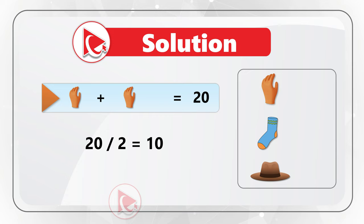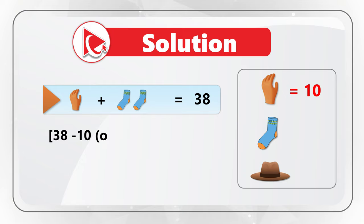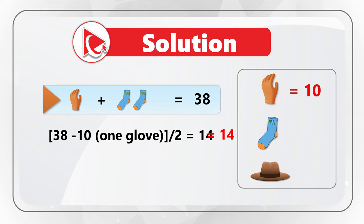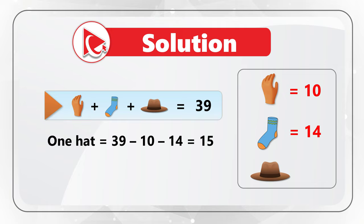Since 2 gloves equals 20, 1 glove is equal to 10, because 20 divided by 2 equals 10. For the second expression, 1 glove and 2 socks equals 38. 38 minus 10, which is the calculated value for 1 glove, and then divided by 2 equals 14. Which means the numerical value associated with 1 sock is 14. For the third expression, 1 glove plus 1 sock plus 1 hat equals 39. We can calculate the value associated with hat — it equals 15, because 39 minus 10 minus 14 equals 15.